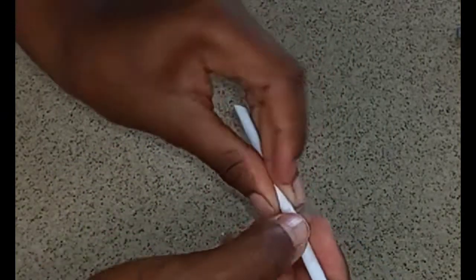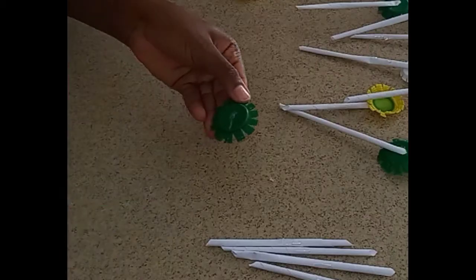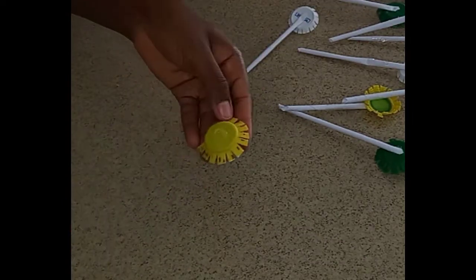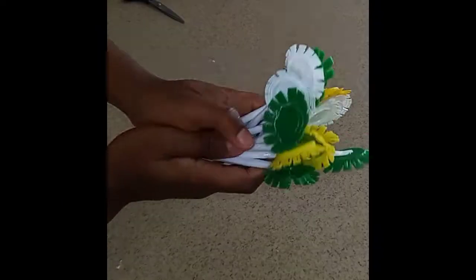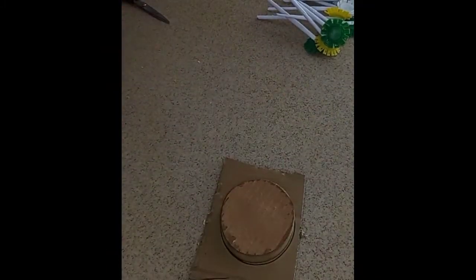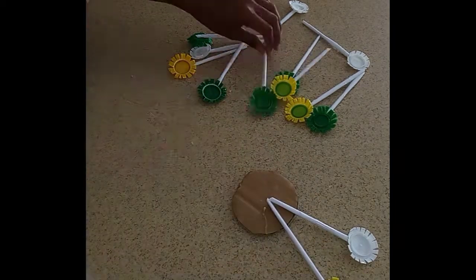Then you're going to go in with your glue gun and secure your paper to the back of your bottle caps. After you have completely done that, you're going to go in with a piece of cardboard and cut out a small circle or whatever shape you want. Then use your glue gun to secure all your flowers to your cardboard.